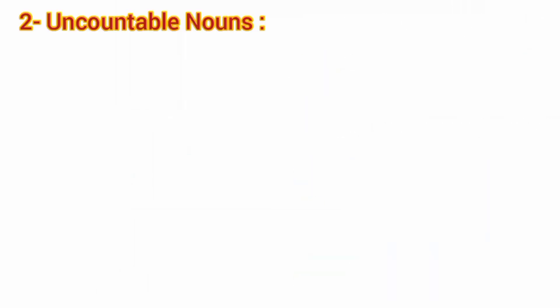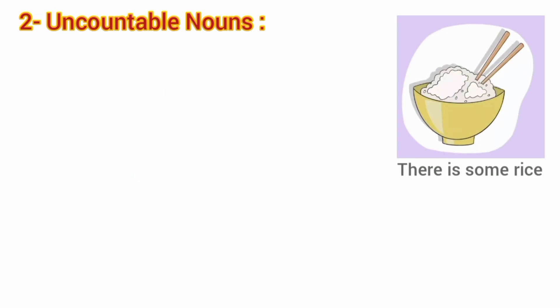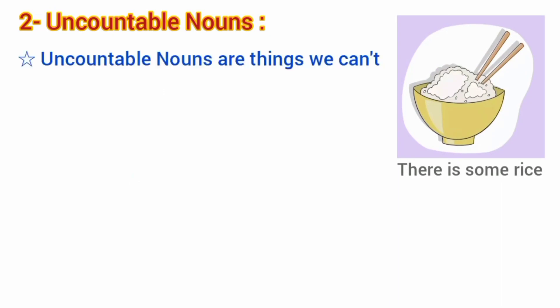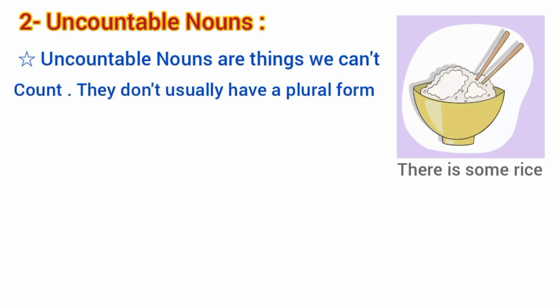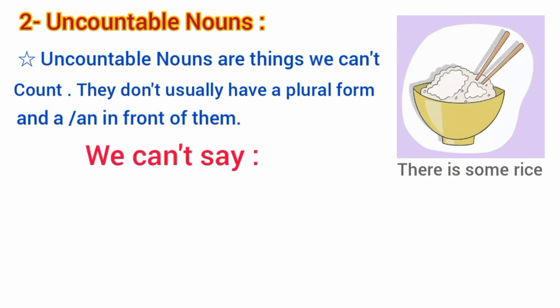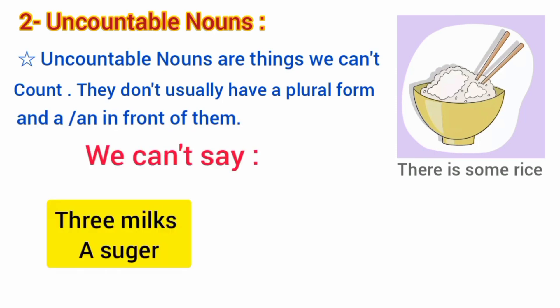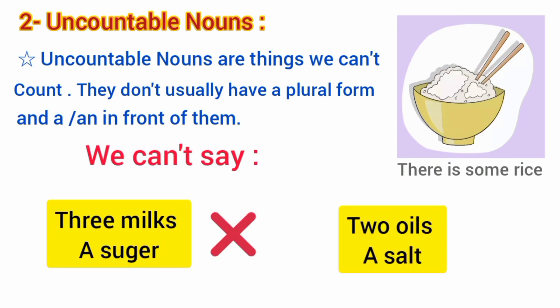Second: uncountable nouns. Look at this example: there is some rice. Uncountable nouns are things we can't count. They don't usually have a plural form or a or an in front of them.